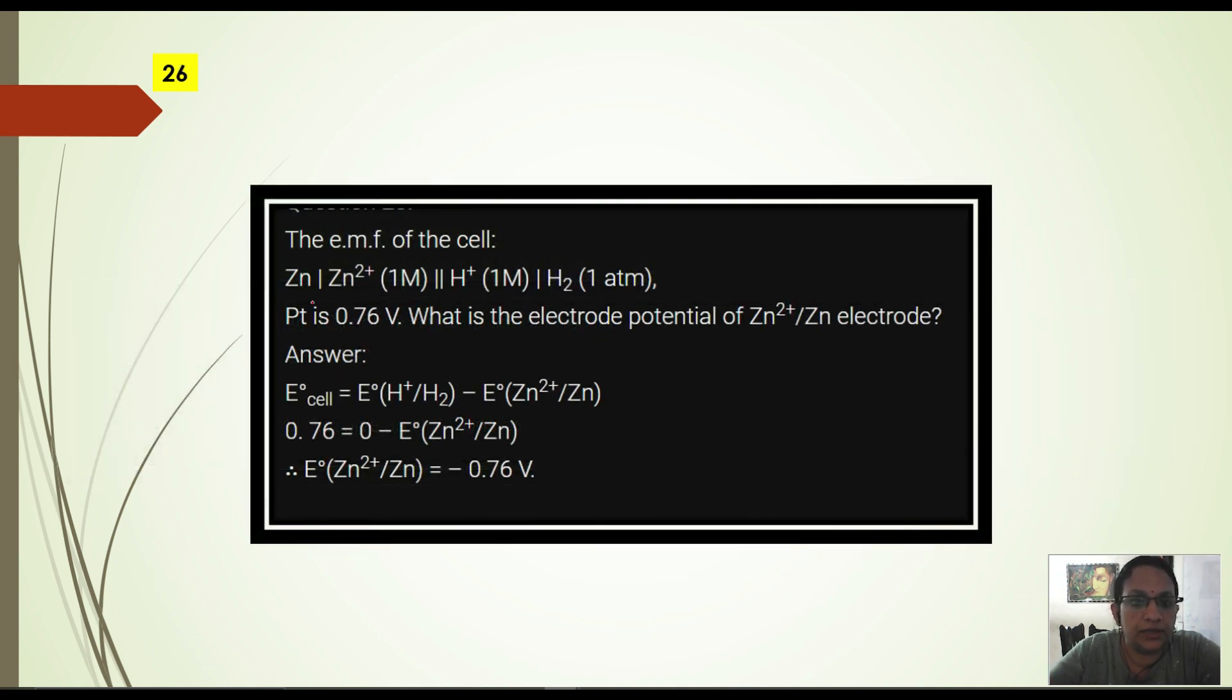Emf of the cell: zinc then hydrogen electrode, platinum, is 0.76 volt. So we are going to ask what is the electrode potential of zinc? E of the cell generally what do we say? ER minus EL.